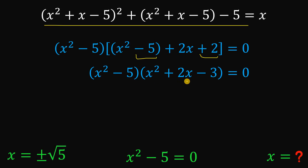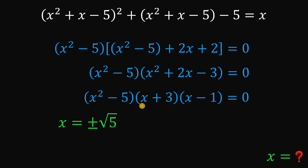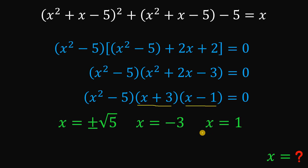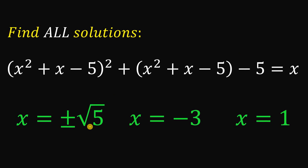And there you have it — we've factored the equation as x squared minus 5, multiplied by x squared plus 2x minus 3. But we're not done yet, because x squared plus 2x minus 3 can be factored further as x plus 3 multiplied by x minus 1. Using the zero product property, at least one factor must equal 0. From x squared minus 5 equals 0, we get x equals positive or negative square root of 5. From x plus 3 equals 0, we get x equals negative 3. And from x minus 1 equals 0, we get x equals 1.